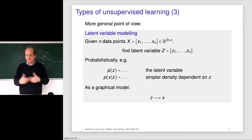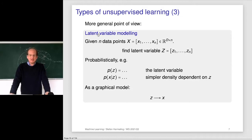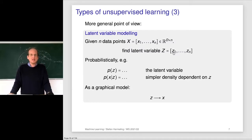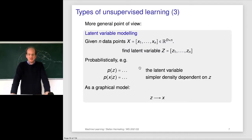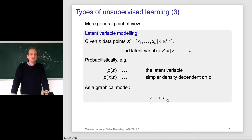A more general point of view is latent variable modeling — ignoring whether we have a continuous or discrete space of latent variables. We have the point cloud and we invent latent variables, one for each data point, as unknown quantities. These could be cluster assignments, low-dimensional embeddings, or both simultaneously. These latent variables capture the relevant information that allows us to generate a data point. Generally, we talk about a latent variable distribution P(Z) and a conditional distribution P(X|Z) that generates a data point — like a graphical model with an arrow from Z to X.